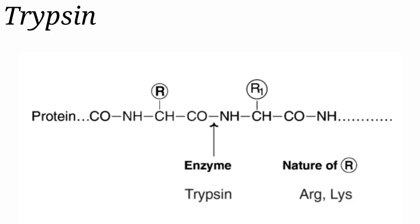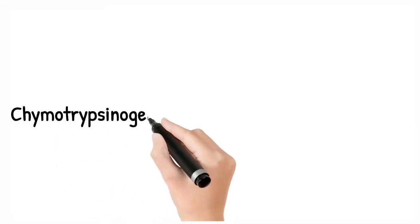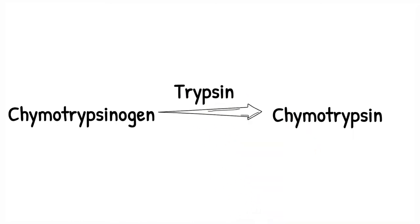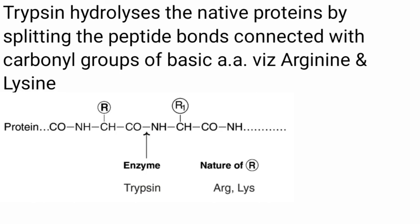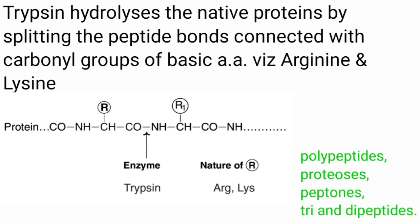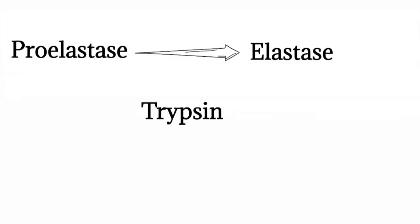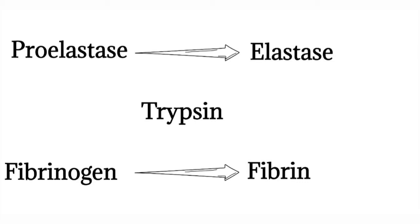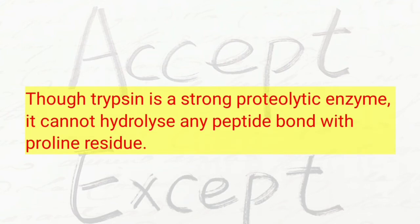The optimum pH of trypsin is 8 to 9. Trypsin can hydrolyze peptide bonds formed by the carboxylic group of arginine and lysine. Chymotrypsinogen is converted into chymotrypsin by trypsin. Trypsin hydrolyzes native proteins, particularly basic proteins, by splitting the peptide bond connected with the carbonyl groups of basic amino acids like arginine and lysine, forming polypeptides, proteoses, peptones, and tri- and dipeptides. Trypsin also activates proelastase to elastase and fibrinogen to fibrin, enabling blood coagulation. However, trypsin cannot hydrolyze any peptide bond with proline residues.